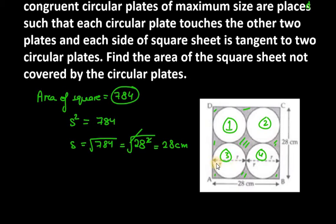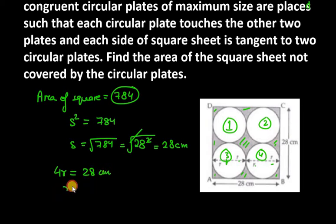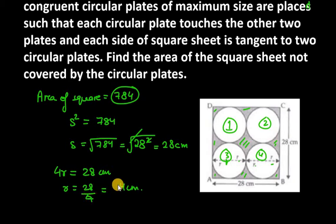As you can see in the representation, the side of the square equals R + R + R + R, so 4R = 28 cm. R equals 28 over 4, which is 7 cm.